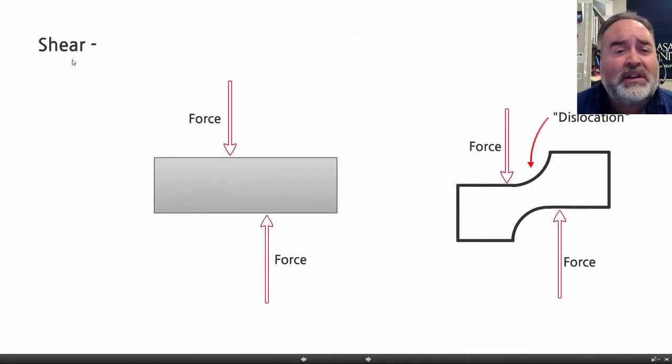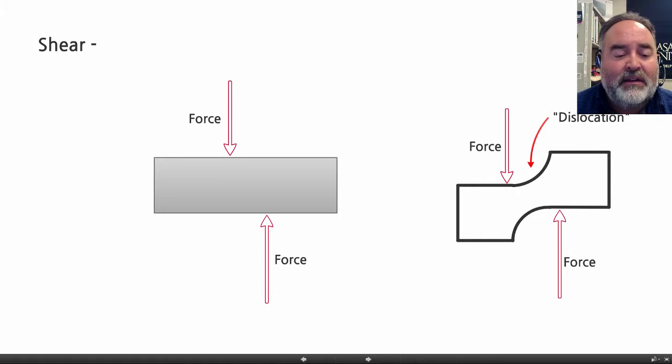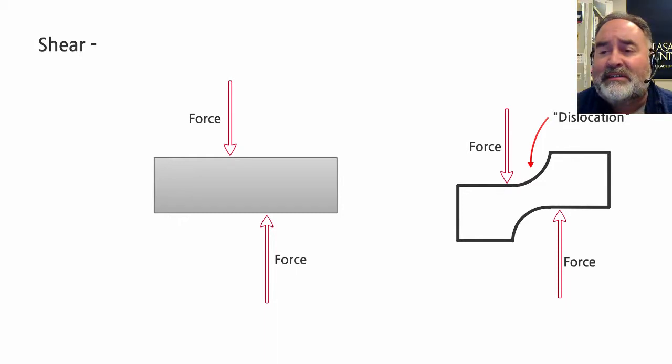When you shear or cut things off axis, we produce something called dislocation. Let me make my face go away. Dislocation is the term. We talked about necking down, we talked about bulging, now we're talking about dislocation.